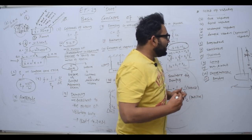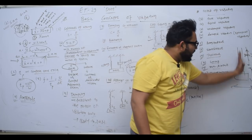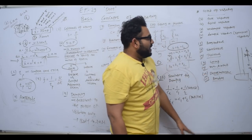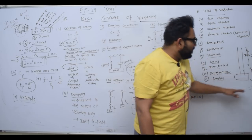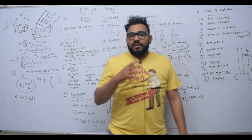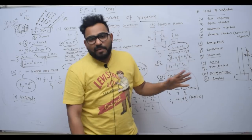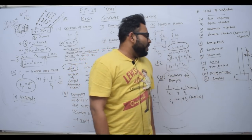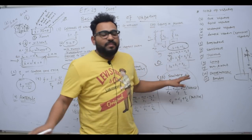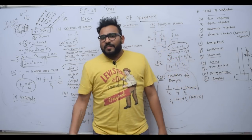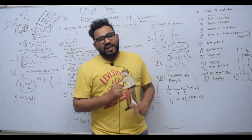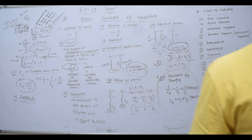Linear vibration involves a mass-spring system vibrating along its axis. Non-linear vibration is when the vibration is in a perpendicular direction, like transverse vibration. Deterministic vibration is when you can predict the value at any time. If you cannot predict the value at any time, that is called random vibration. So I have covered the basic concepts of vibration here, and we will go further with examples. I hope you like this video — please like, subscribe, and share. Bye bye.